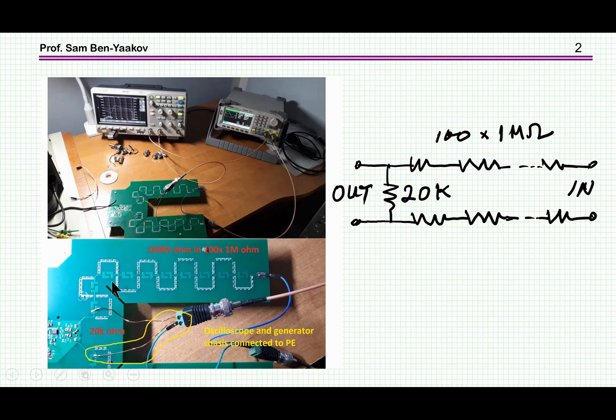We have here a close-up. What it is is basically a chain of 101 megaohm resistors, two branches, and they are loaded in this experiment by 20 kiloohm. This is a divider. This is a preparation for a differential probe, although the experiments shown here are done single ended.